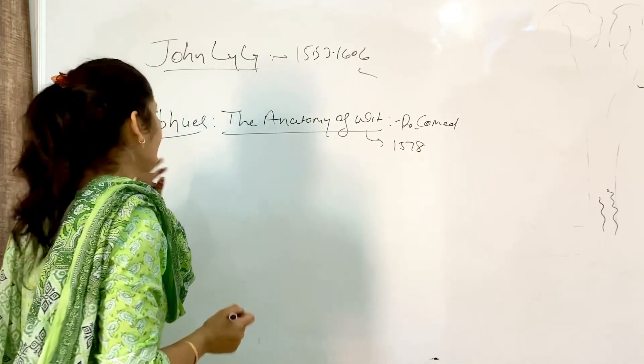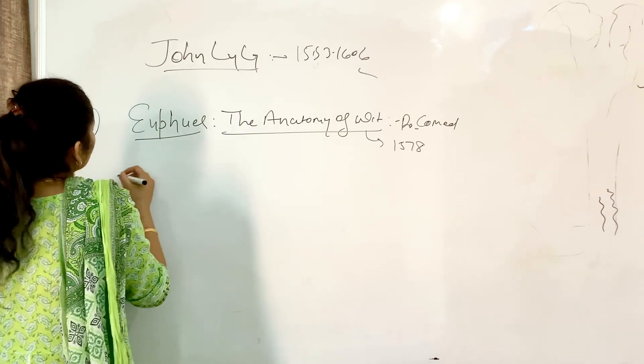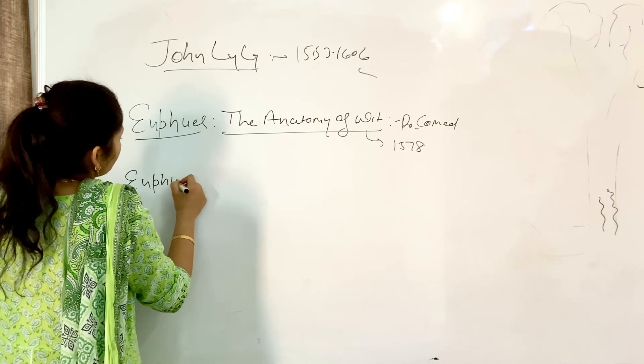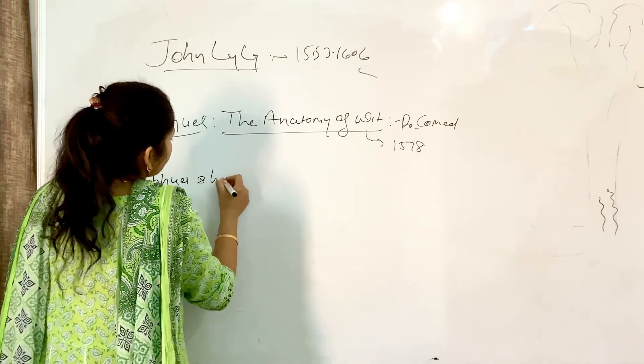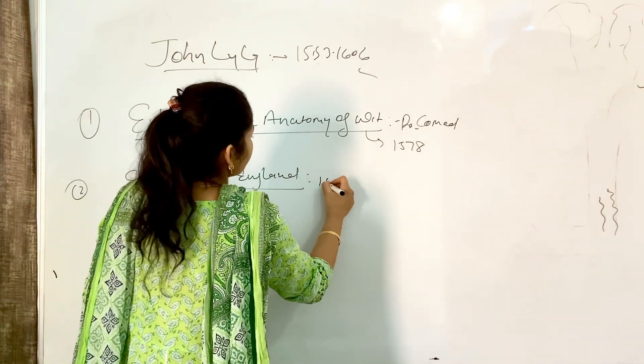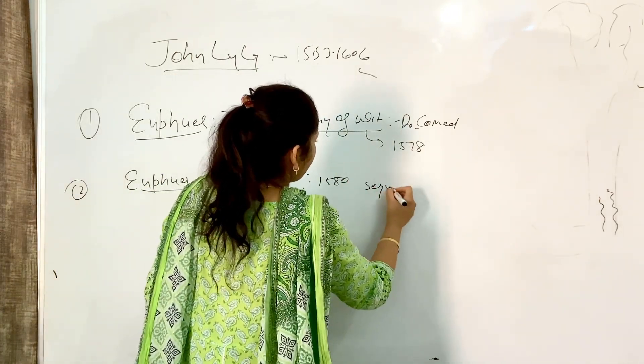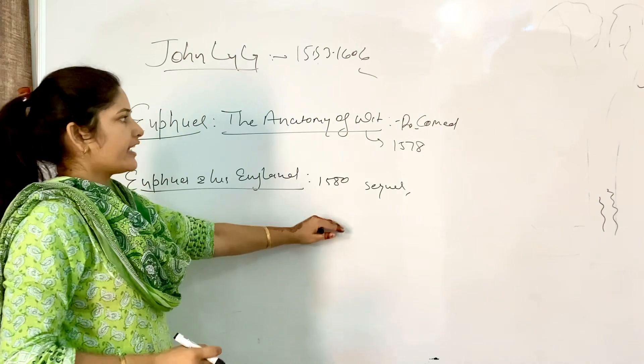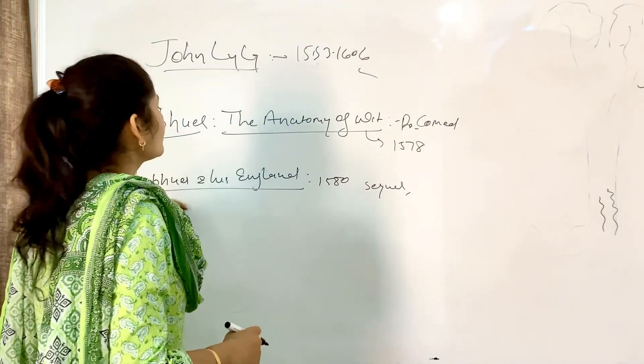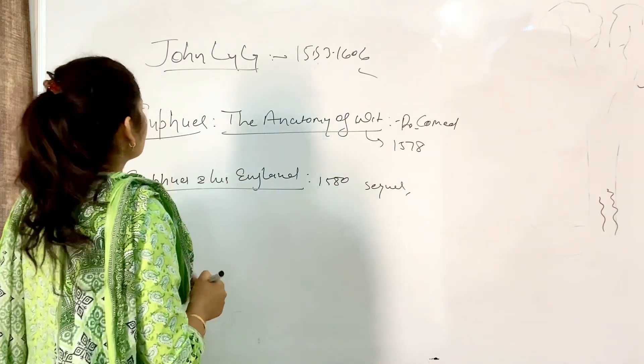And the second, which is its sequel, is Euphues and His England, published in 1580. So it is the sequel. Both tell a story where the second book, the sequel, completes the story. Both are one story - this book and its sequel.